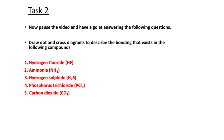It's your turn to have a go at some covalent bonding diagrams. Please pause the video and answer the five questions — draw covalent bonding diagrams for the following compounds: hydrogen fluoride, ammonia, hydrogen sulfide, phosphorus trichloride, and carbon dioxide.